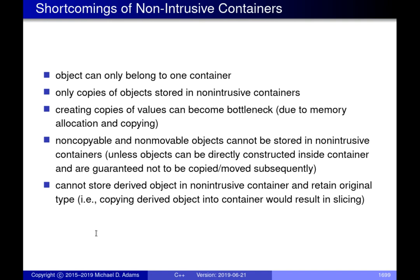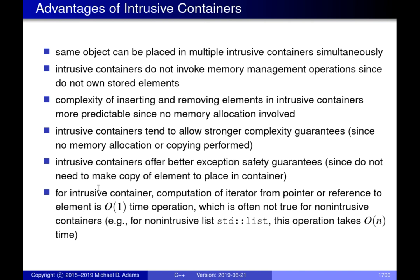Shortcomings of non-intrusive containers: objects can only be placed in one container; only copies are stored, not actual objects, requiring copy or move constructors and incurring overhead. A significant problem arises with objects that can't be copied or moved — the only way to put such objects in a non-intrusive container is via something like emplace_back, which directly constructs the object inside the container without copying or moving.